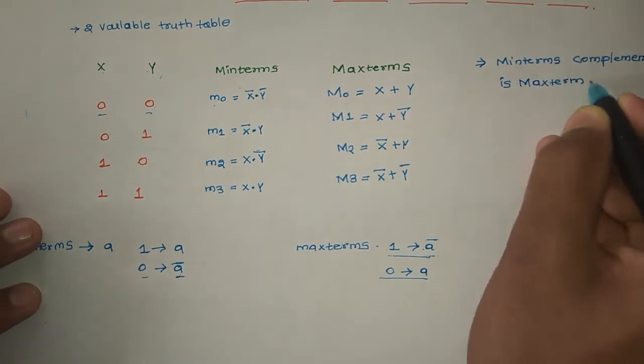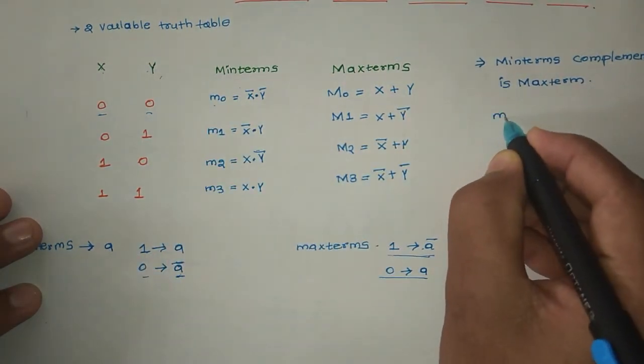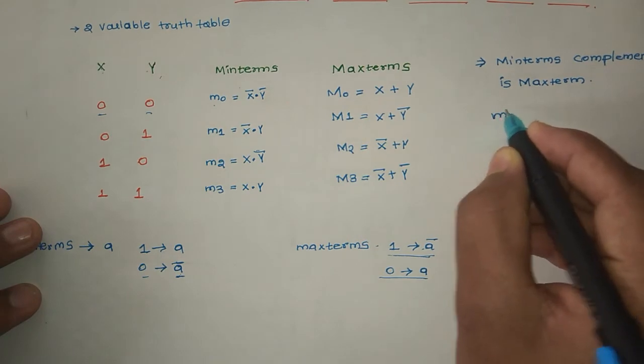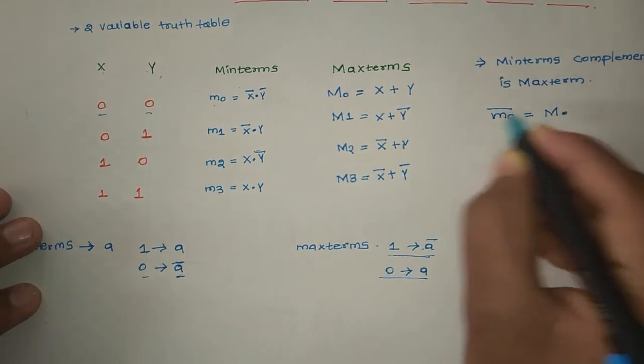Min terms complement is max term. So m0 is small m0. So what do you say? m0 complement equal to capital M0.